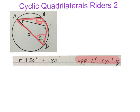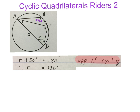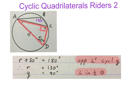We start by saying R plus 50 degrees equals 180 degrees — opposite angles of a cyclic quadrilateral. We minus the 50 from the 180 and get R equals 130 degrees, which we write in on the sketch. Then we can see that Q is equal to 90 degrees — angles in a semicircle. The red triangle contains the diameter, so that angle must be 90 degrees.